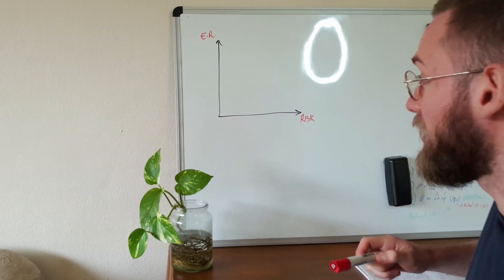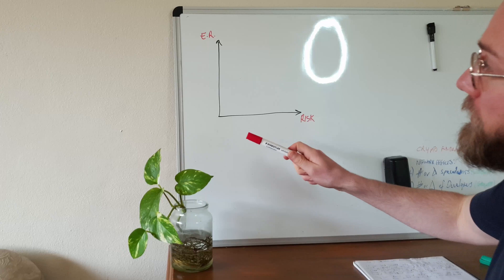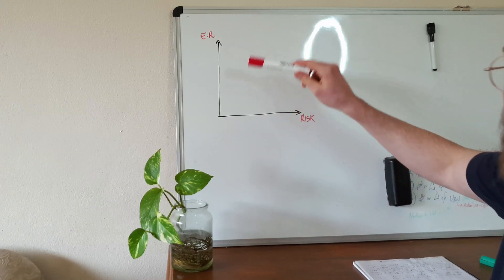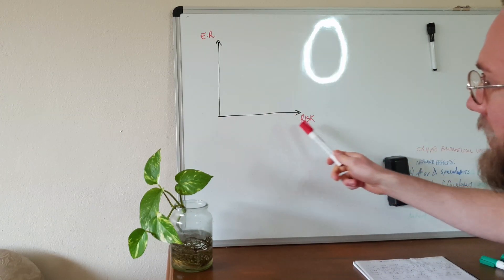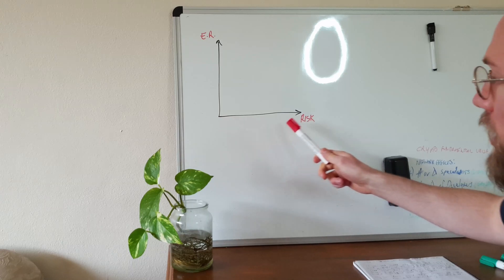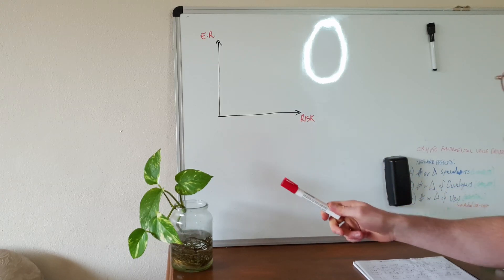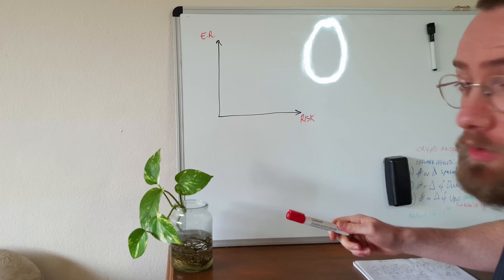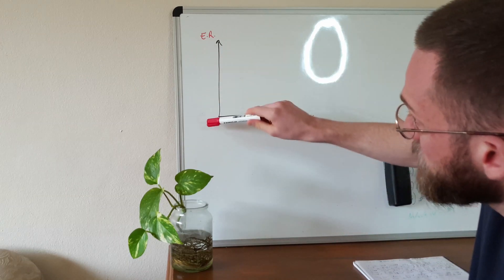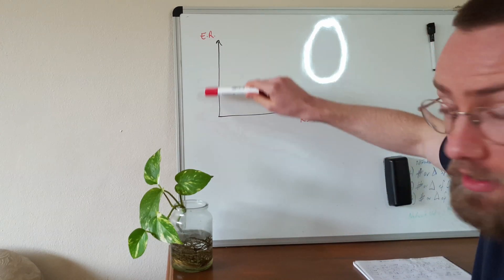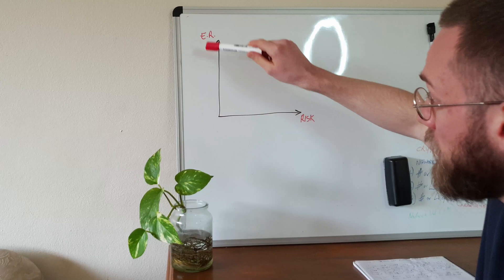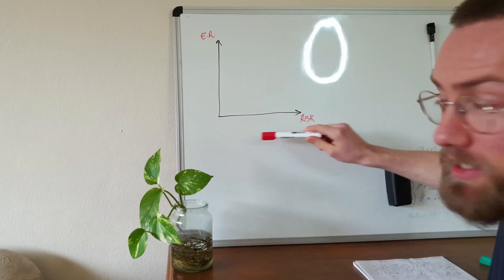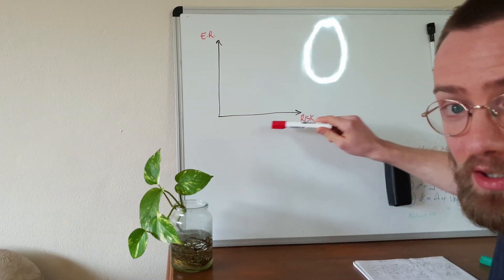Let's jump on the whiteboard and work through some examples. On the y-axis I've got expected return, and on the x-axis I've got the risk associated with that investment. What we want to do is increase our expected return as much as we can whilst minimizing our risk.